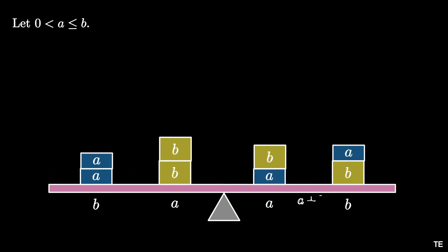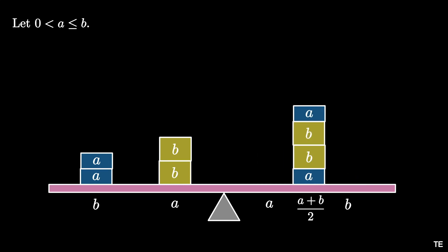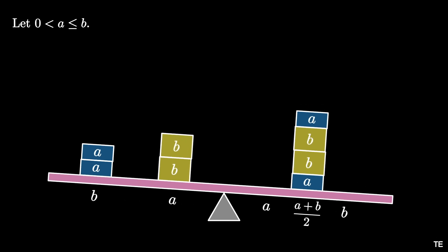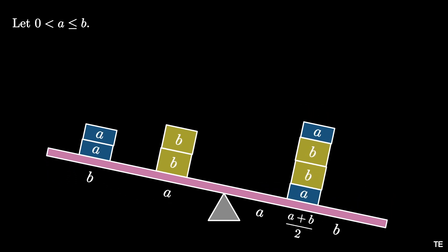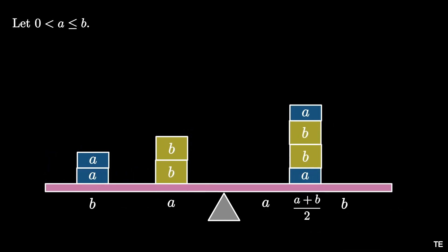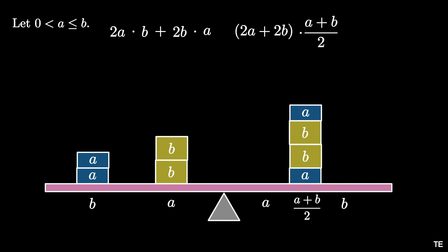Finally, construct the midpoint of a and b — (a + b)/2 — and move the (a + b) weights on the right to this midpoint. The weights are equal and moved equal but opposite distances, so once again the net moment is unchanged. The moment to the left of the fulcrum is 2a·b + 2b·a, and the moment on the right is (2a + 2b)·(a + b)/2.